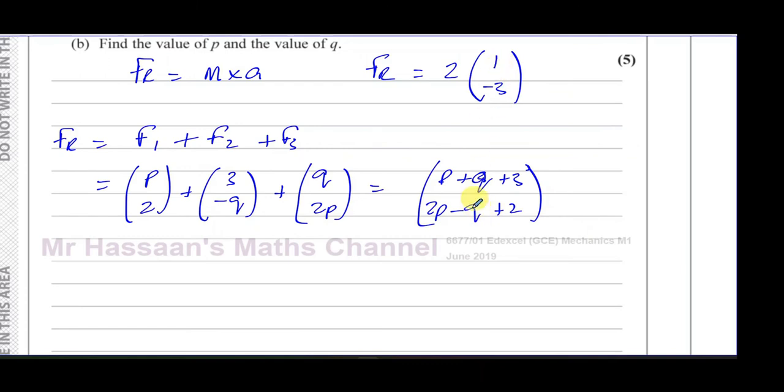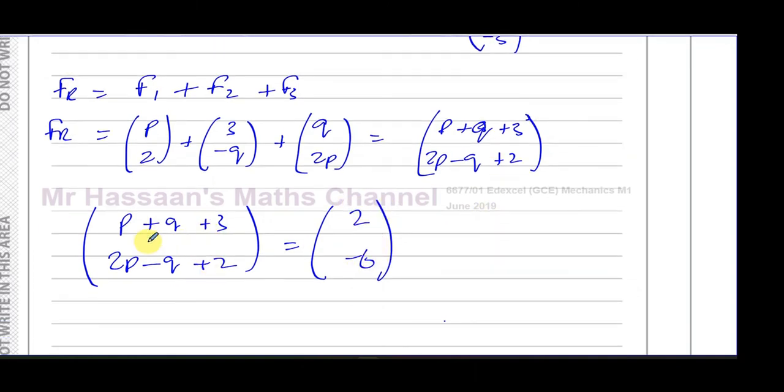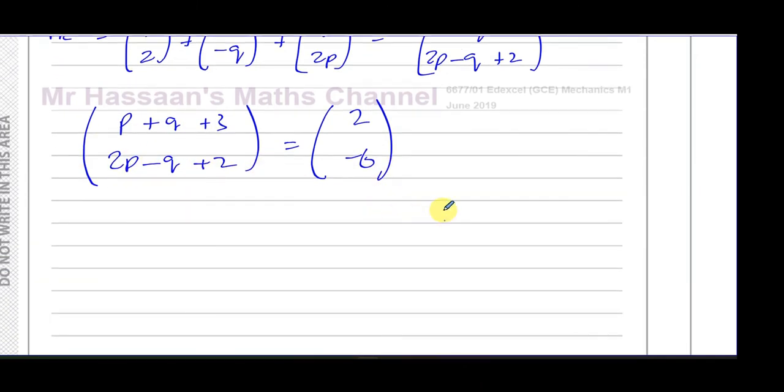Now I can set up an equation. These two are the same - they're both the resultant force. So I can say that (p + q + 3) and (2p - q + 2) equals (2, -6). Just multiplying that out. That's the resultant force in terms of the mass times acceleration. That's the resultant force in terms of the sum of the three forces.